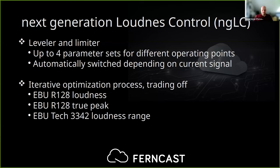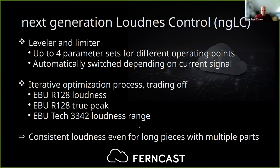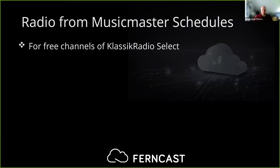What is internally going on is an iterative optimization process. We trade off the R128 loudness, the R128 true peak, and the EBU loudness range — a trade-off of all three to reach the optimum point. What we actually achieve is consistent loudness experience, even for longer pieces with multiple dynamically diverse parts. That turned out to work really well, and we have pre-processed the entire Classic Radio library with this, so you can listen to the results.